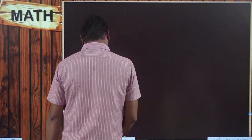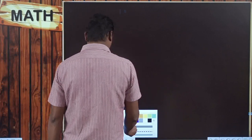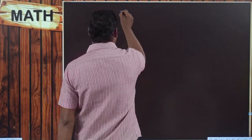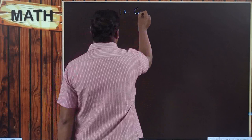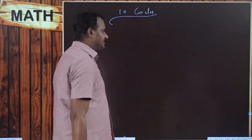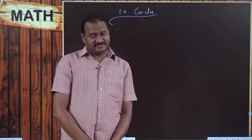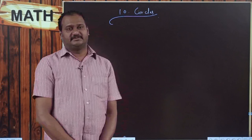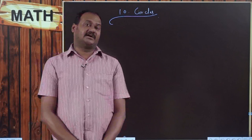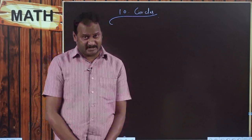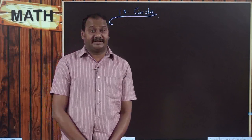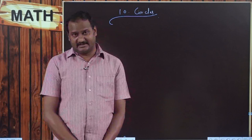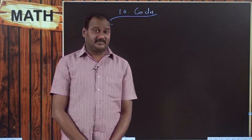What are we going to discuss in the concept called circles, and what do you mean by a circle? At the end of this module we will learn what do you mean by a circle, what do you mean by chord of a circle and what are the properties of chord, what do you mean by intersecting circles and how can we draw chord for intersecting circles, and then some applications on the properties of chords.